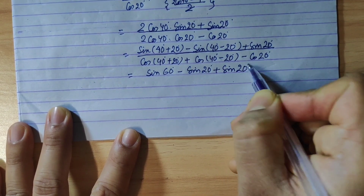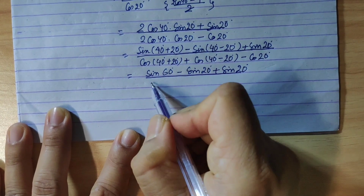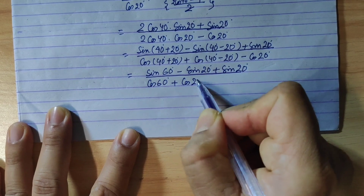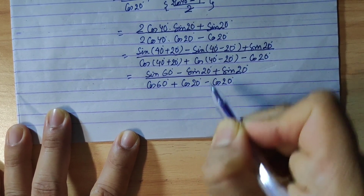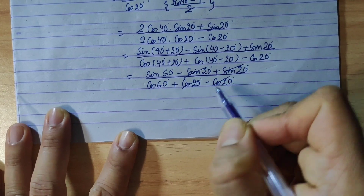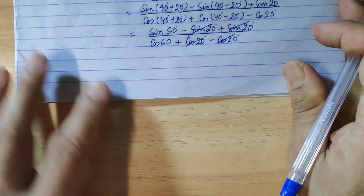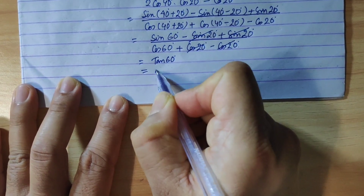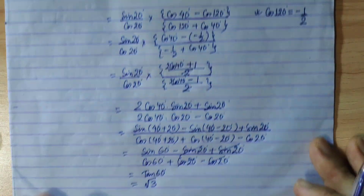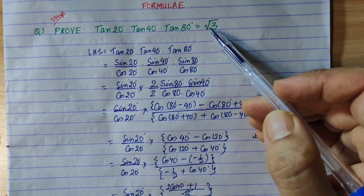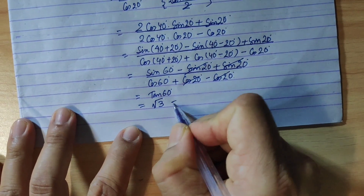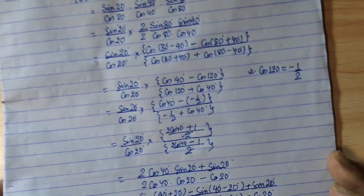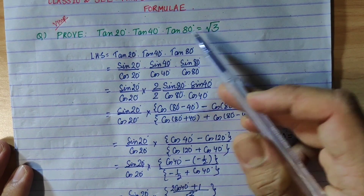Plus sin20 in the numerator, and cos60 + cos20 − cos20 in the denominator. The sin20 terms cancel and cos20 terms cancel, leaving sin60/cos60, which equals tan60, and tan60 = √3. Therefore LHS = RHS. Proved.